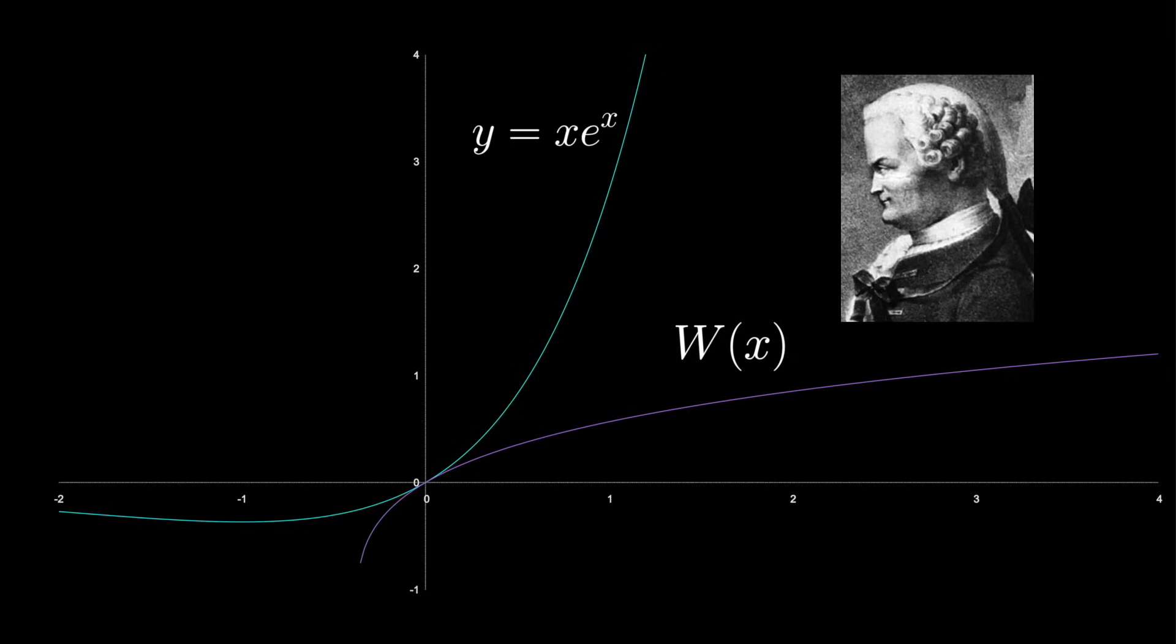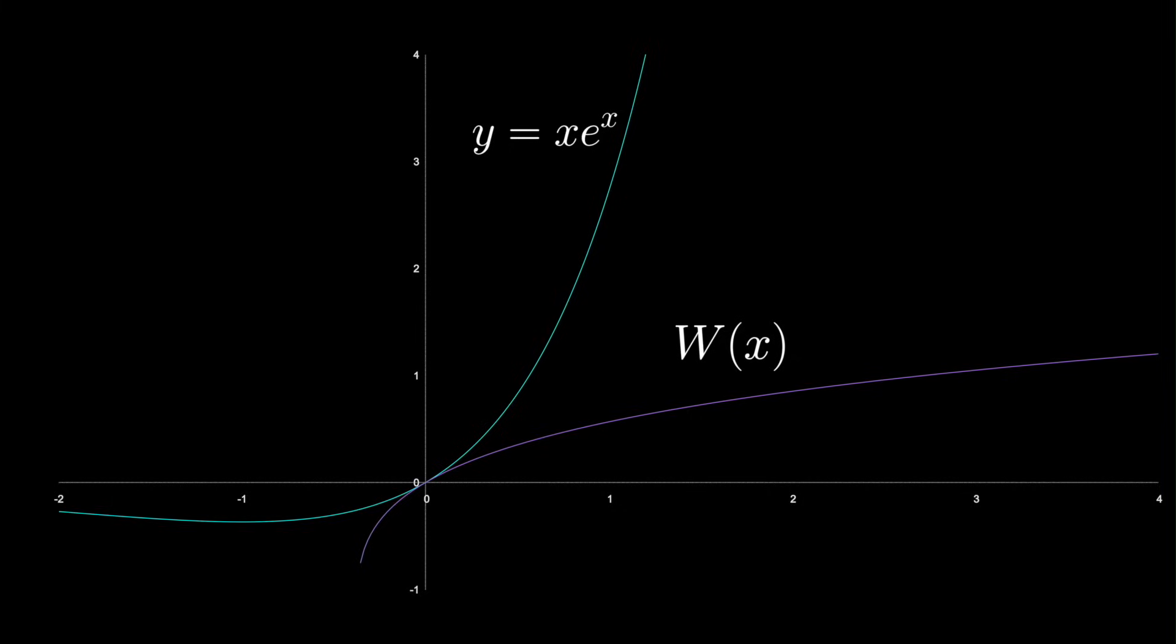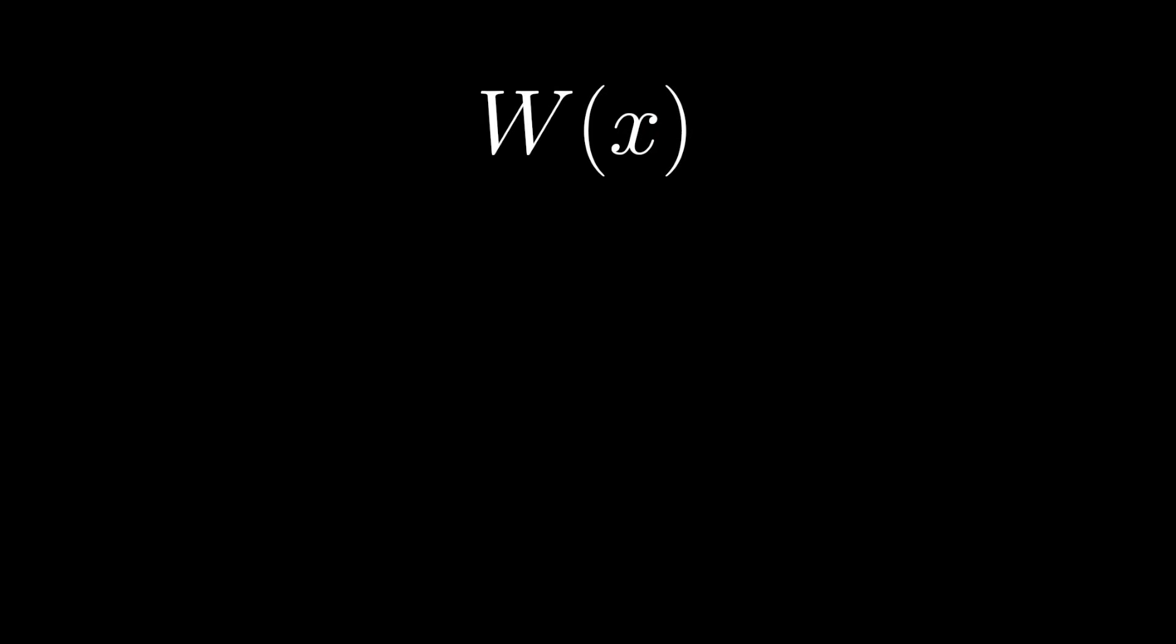It's sometimes called the product logarithm because it is the inverse of x times e to the x. When x equals 1, the value of this function is the omega constant. Now while this function is easy to describe graphically, it is more difficult to describe symbolically. In fact, there is no way to describe it in a closed form using elementary functions.